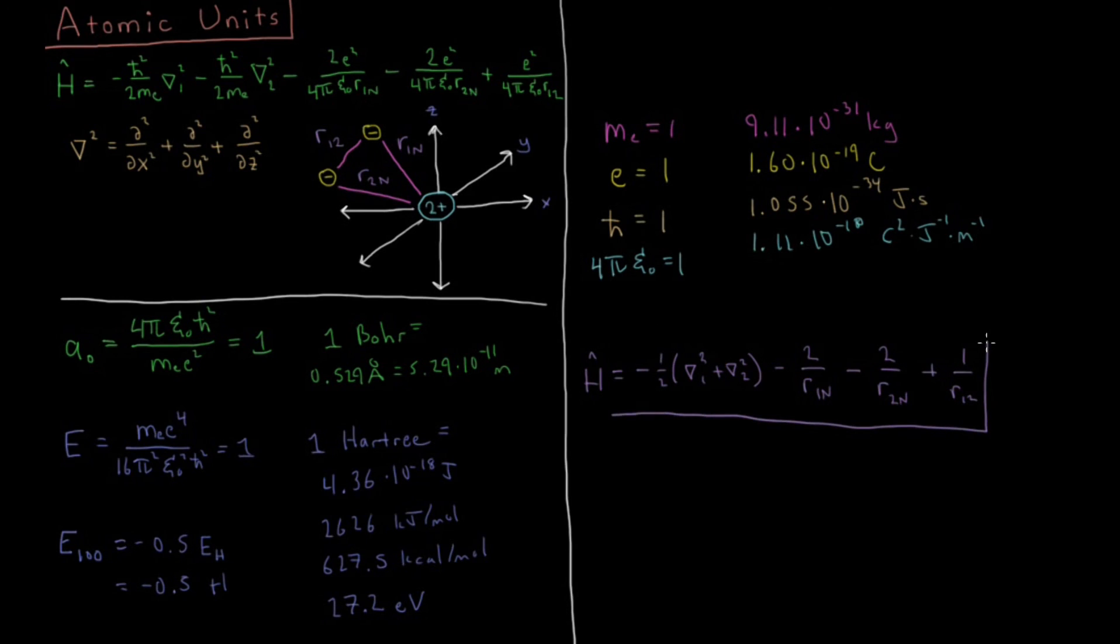So our Hamiltonian simplifies down into this thing which has far, far fewer constants to work with, and not only looks aesthetically better, but it's going to be easier to work with for doing things like calculations, and we're not going to have all kinds of constants which will get lost in the fray as we try to calculate the energies and wave functions for atoms and molecules going forward.